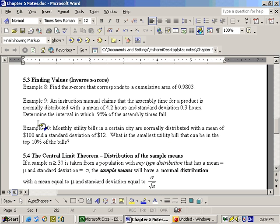Now, more realistic problems are like these two here, example 9 and example 10. Example 9 says an instruction manual claims that the assembly time for a product is normally distributed with a mean, so the Mu is 4.2 hours and a standard deviation of 0.3 hours.